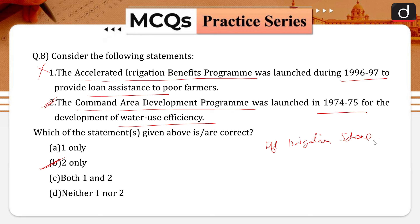The centrally sponsored Command Area Development Program was launched during 1974-75 with the main objectives of improving the utilization of created irrigation potential and optimizing agricultural production and productivity from irrigated agriculture through a multi-disciplinary team under the area development authority. Therefore, the second statement becomes correct for the development of water use efficiency.